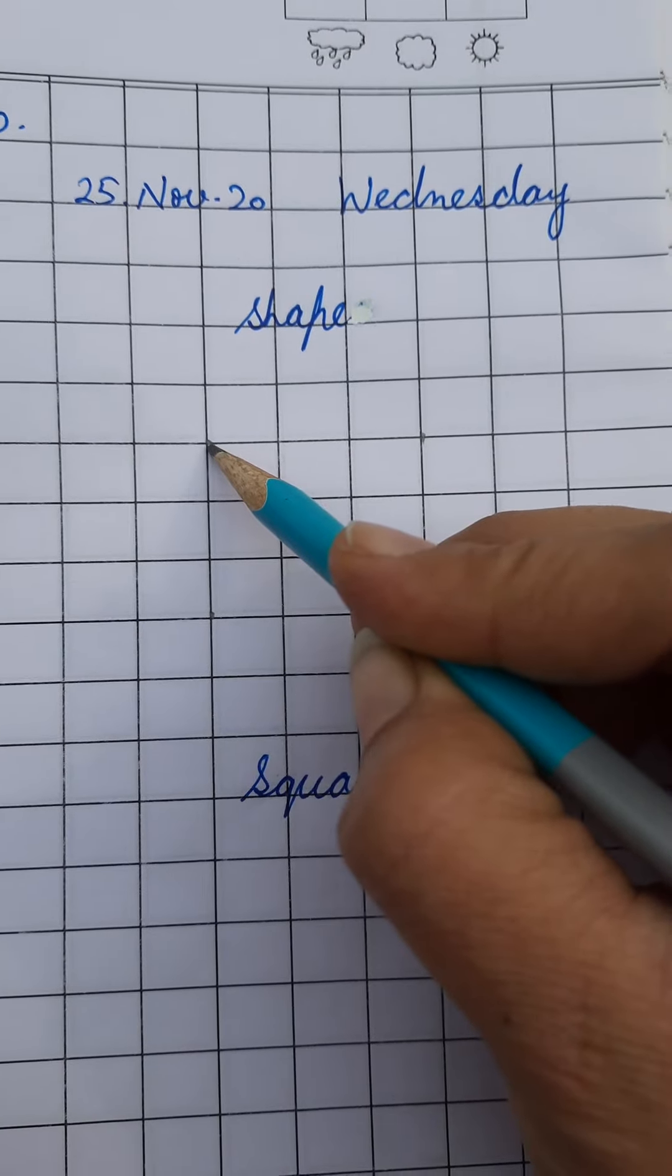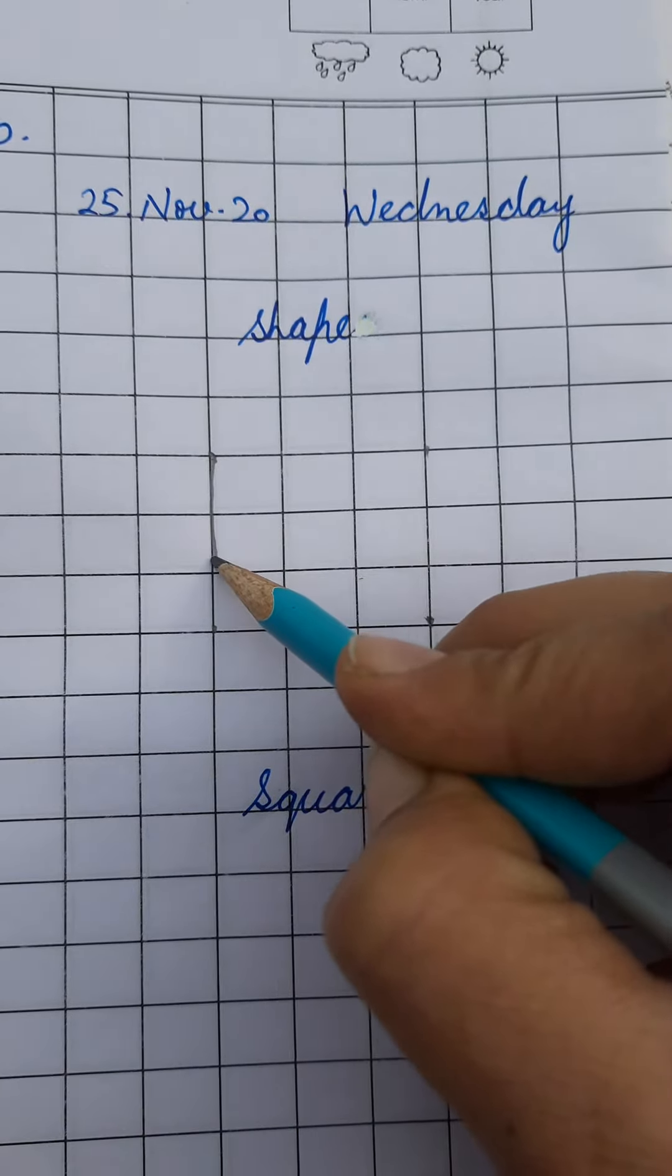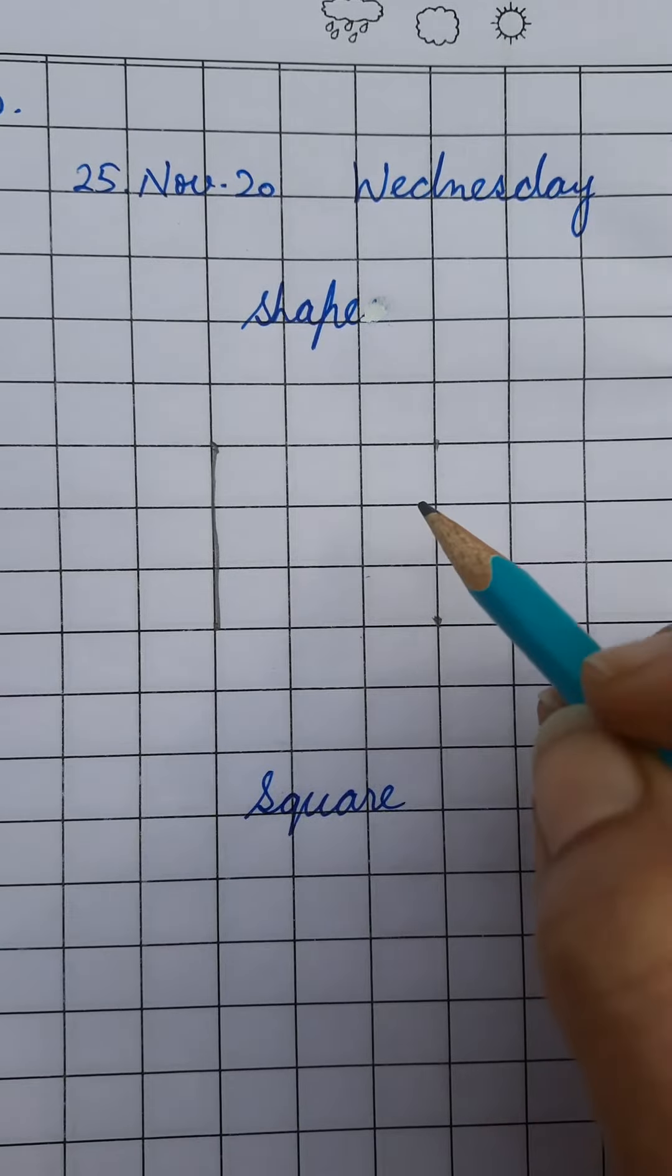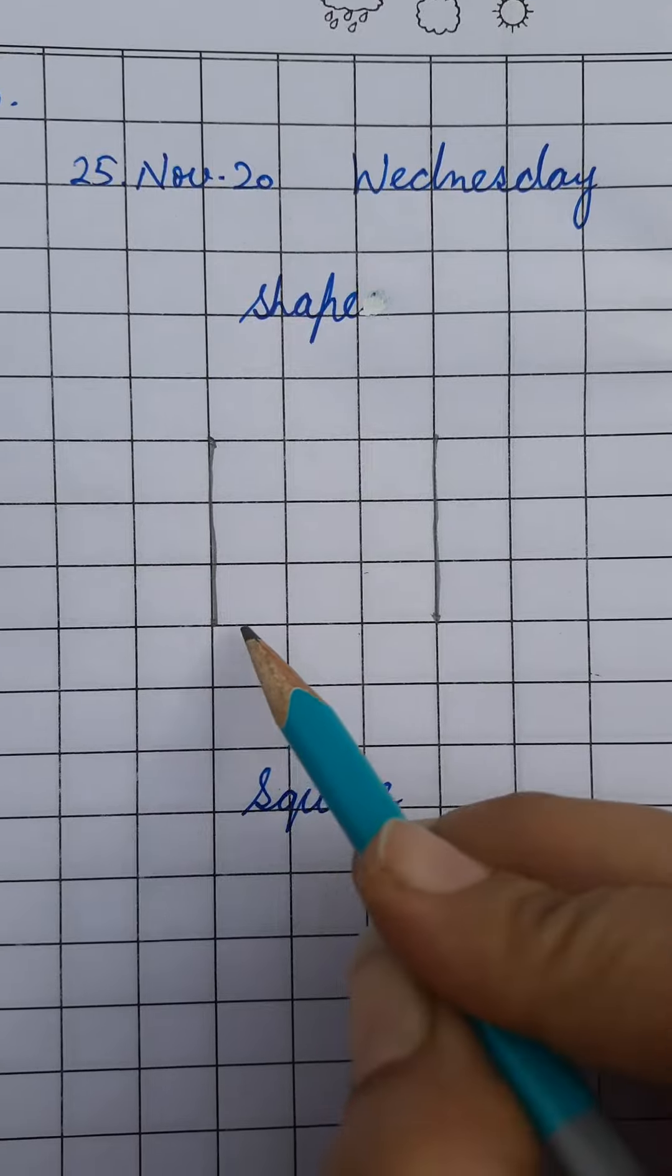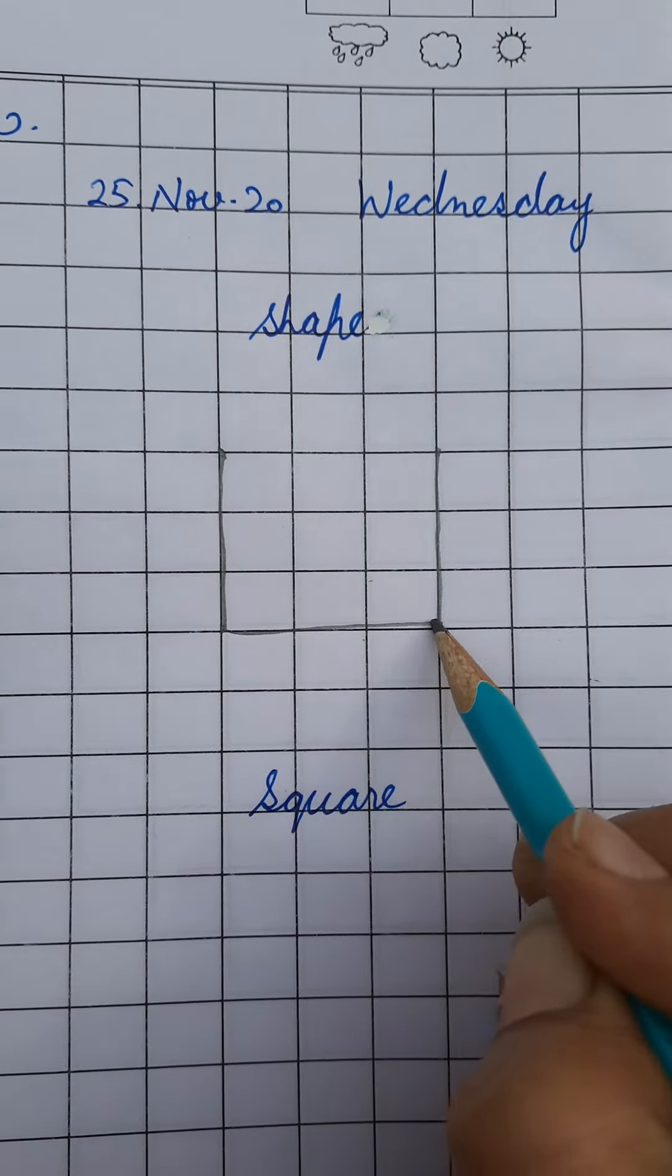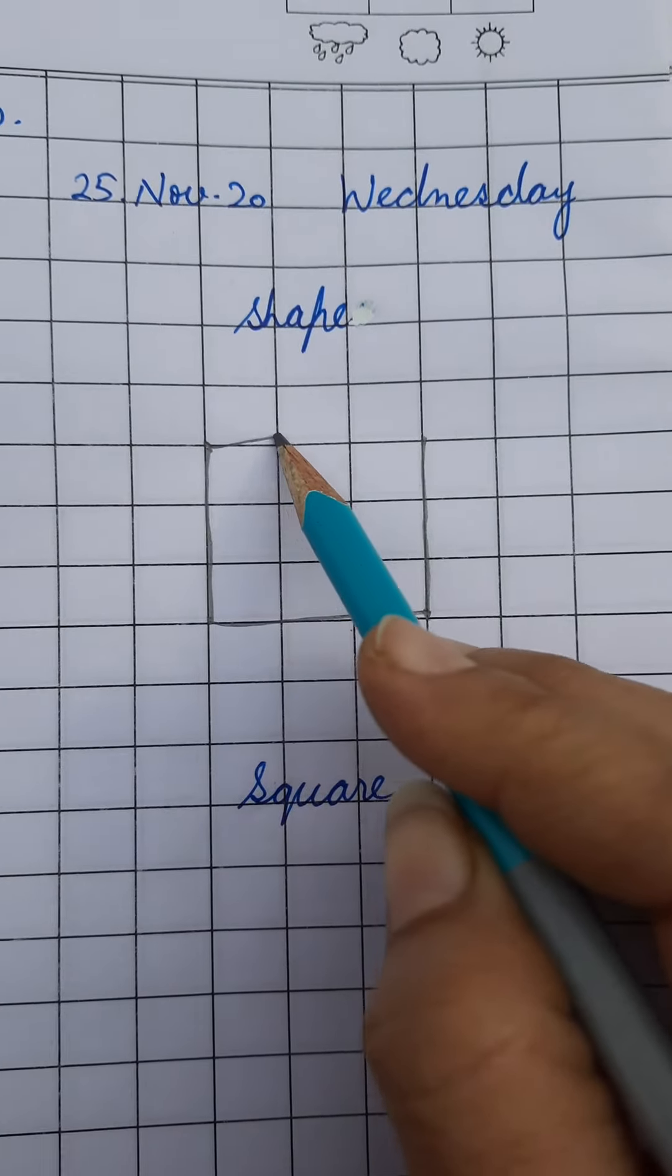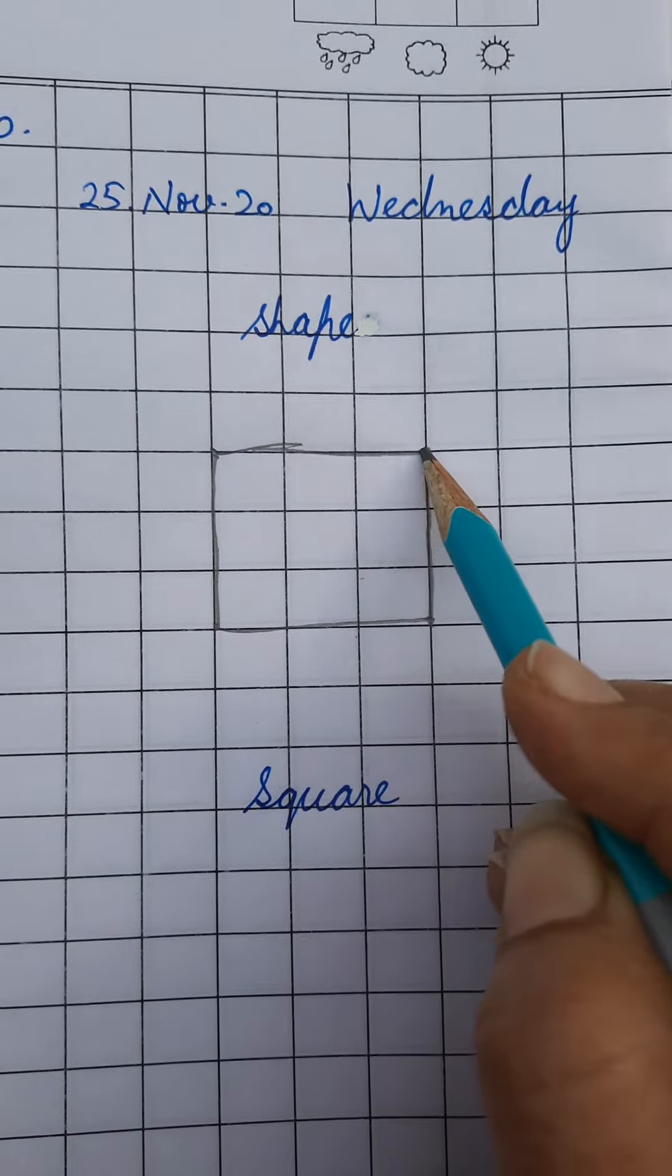Start from here. Make a standing line like this. Make one more standing line like this. Then make a sleeping line. Join these two standing lines.